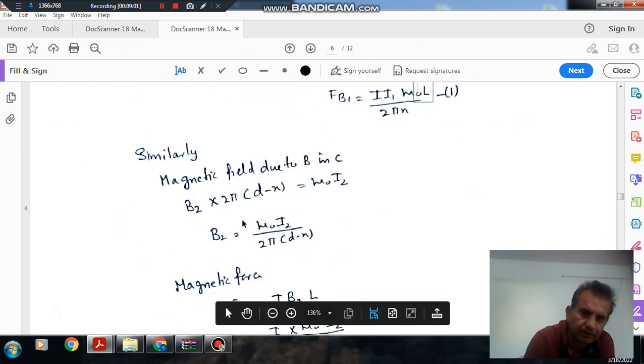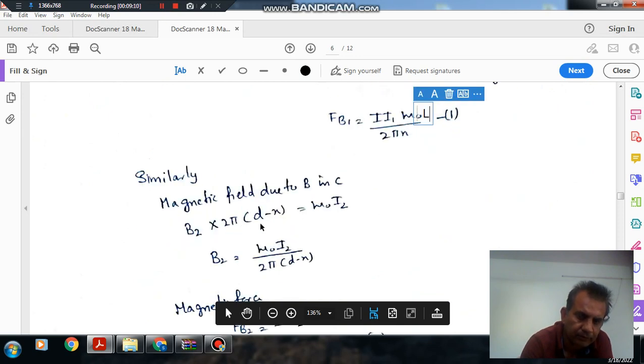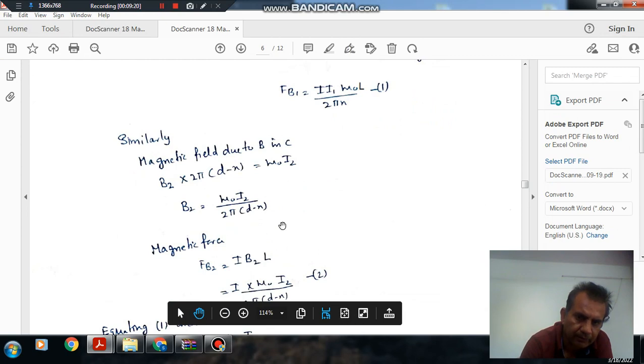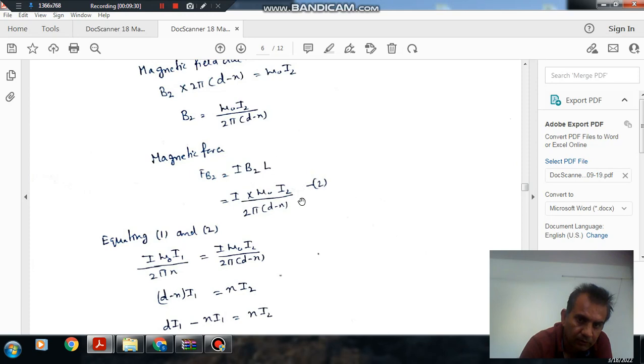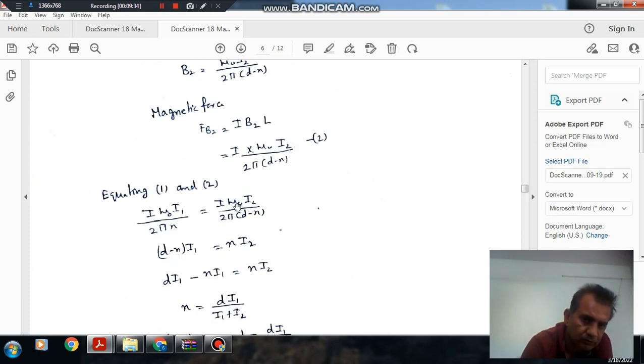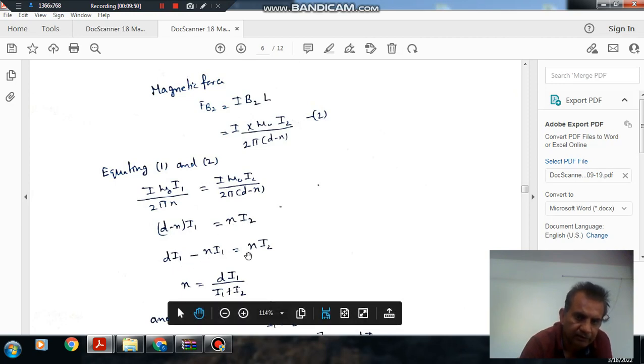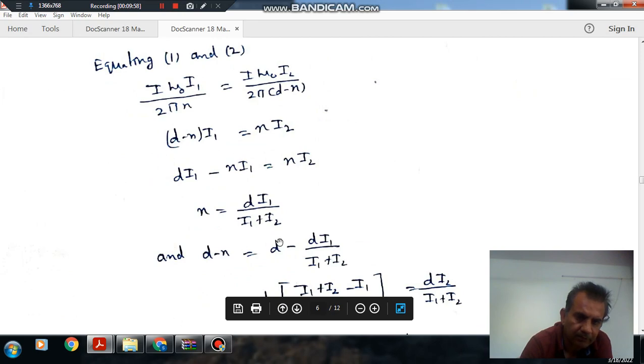Similarly, the magnetic field at C due to I_2 is B_2 = μ_0I_2/(2π(D-X)), and the force F_2 = μ_0I×I_2×L/(2π(D-X)). To have zero net force, F_1 and F_2 should be equal. Solving this, I_1/X = I_2/(D-X), or X = DI_1/(I_1+I_2). Thank you.